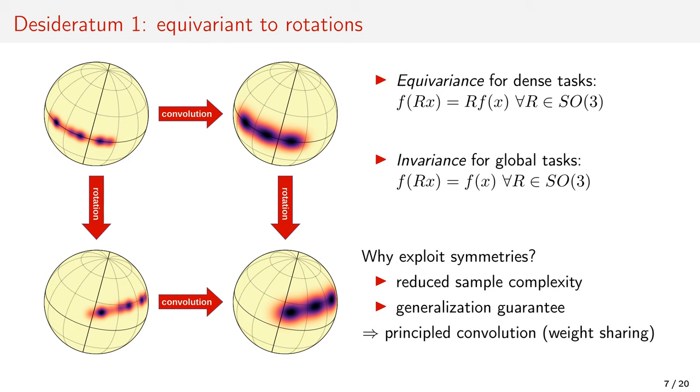Exploiting symmetries reduces sample complexity. We don't have to train on every rotated version of the data. It also gives a generalization guarantee. If I train a neural network to recognize buildings from aerial images, I can guarantee the user that it won't depend on the orientation of those images.